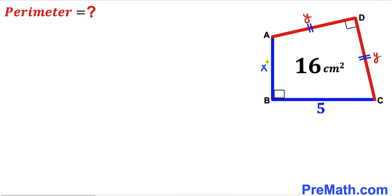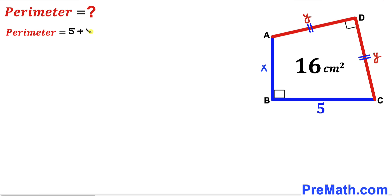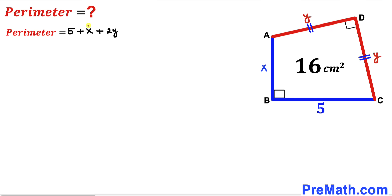Therefore the perimeter of this quadrilateral is going to be simply 5 plus x plus y plus y. If we simplify, that is going to give us 5 plus x plus 2 times y. Now our task is to find the value of x and the value of y as well.